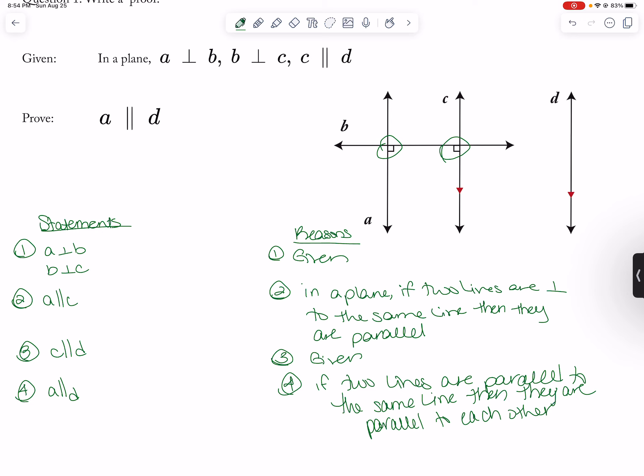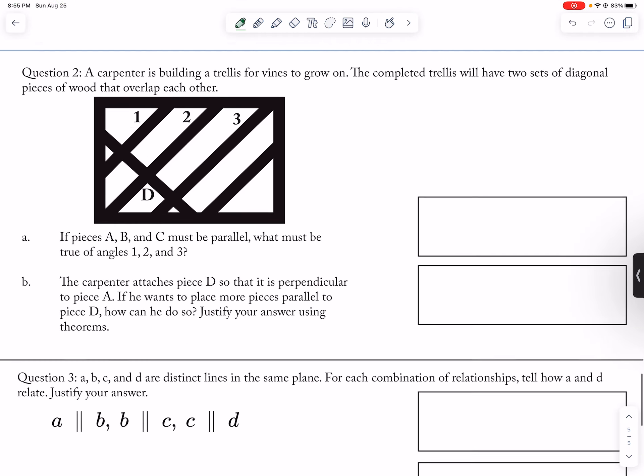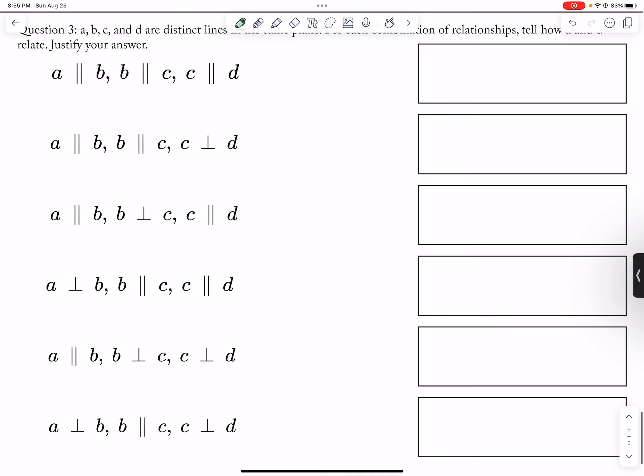Now if we look at the next one, I'm not going to do all of these for number three because I want you guys to try to do some of these yourself. But like here, A is parallel to D because if two lines are parallel to the same line, then they are parallel to each other.